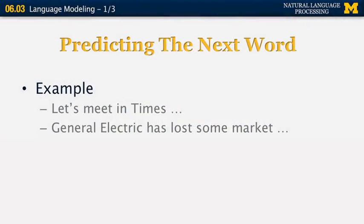Another example: 'General Electric has lost some market blank.' What's the next word? It's not going to be 'square.' Most likely it's going to be something like 'share' — 'General Electric has lost some market share.' Again, in the context of 'losing market something,' it's very likely that the next word is 'share.'